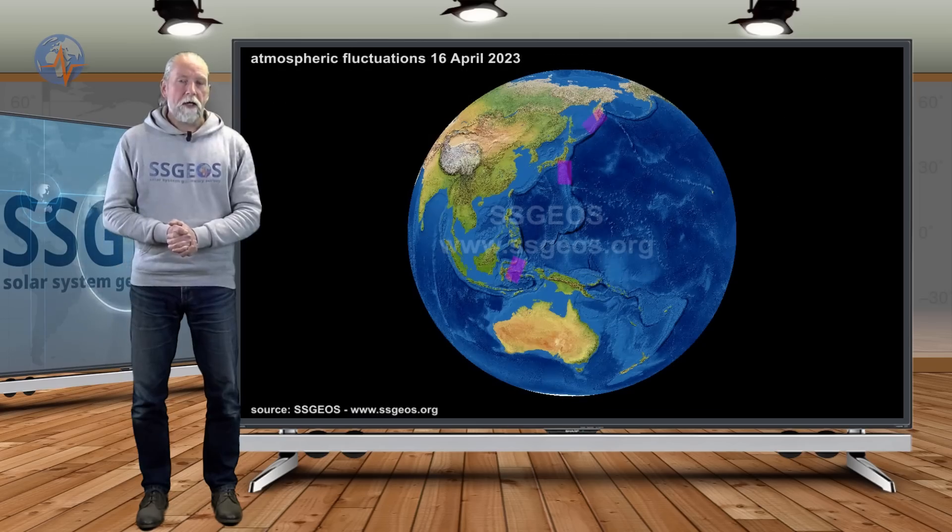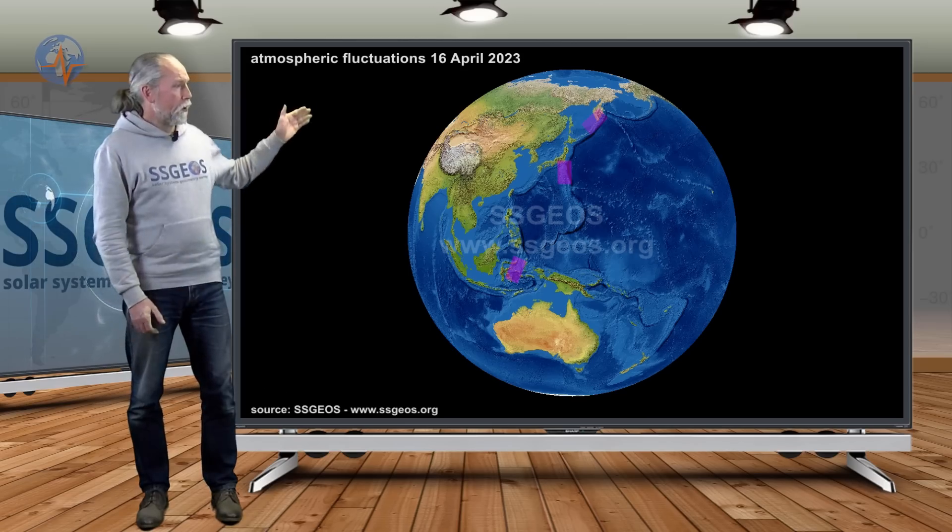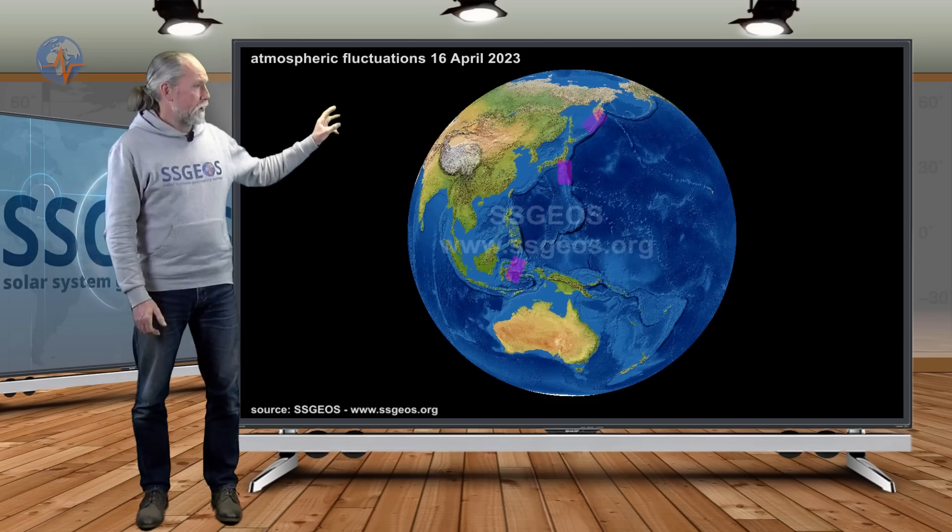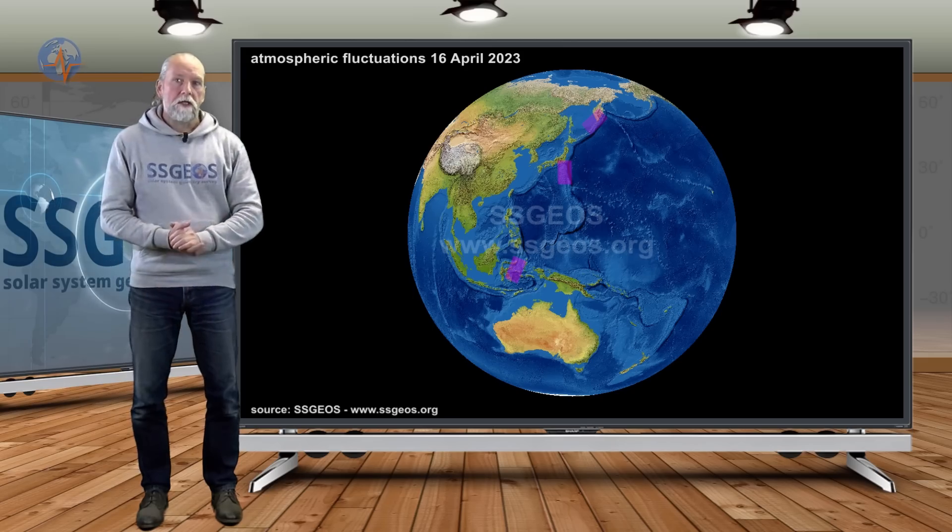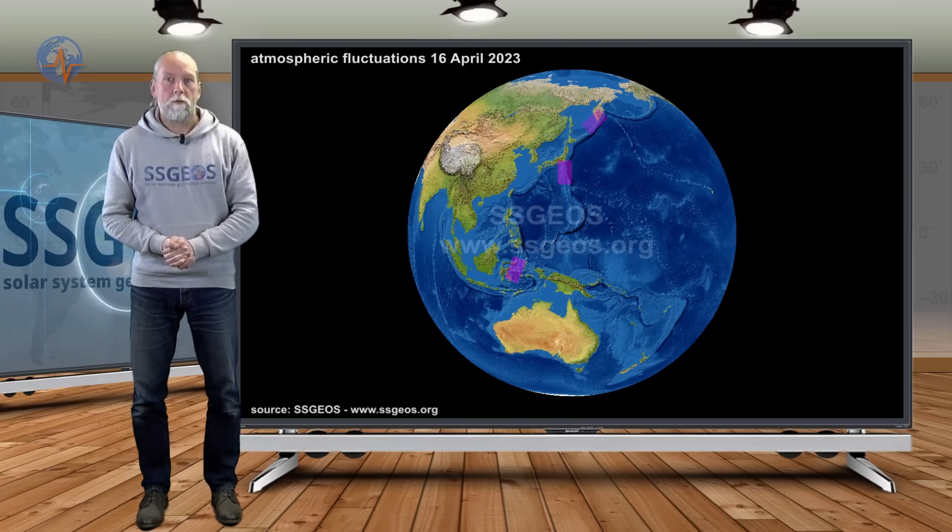If we look at the atmospheric fluctuations that we had in the last couple of days, there were a few over the west Pacific. We recorded that yesterday: Kamchatka, south of Japan, and also just south of the Philippines and just north of the Banda Sea, Indonesia. If we have more fluctuations, we will do additional updates.